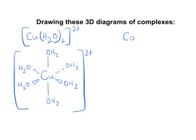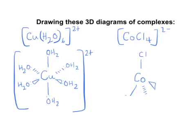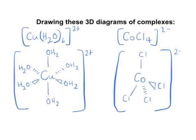To draw a tetrahedral complex, with a coordination number of four because there are four monodentate ligands, each forming one bond, I have four dative covalent bonds around the central ion. To represent tetrahedral as 3D, use two normal lines, one dashed line, and one triangular wedge. Then put your chlorides on each bond, and add square brackets and the relevant charge.